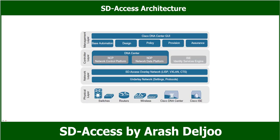Let me explain the SD Access architecture. Cisco SD Access is based on existing hardware and software technologies. What makes it special is how these technologies are integrated and managed together. The SD Access fabric architecture can be divided into four basic layers: the physical layer, network layer, controller layer, and management layer.